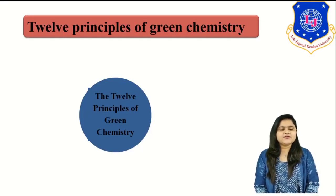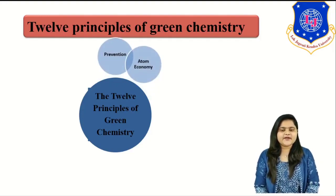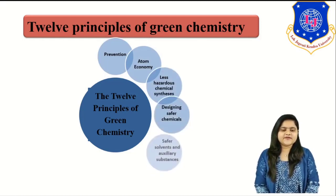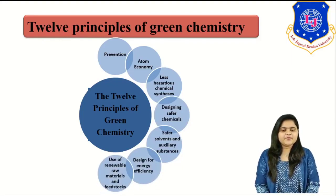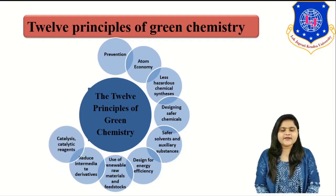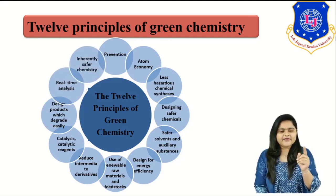In today's lecture, we will cover the 12 principles of Green Chemistry. The 12 principles are: one, prevention; two, atom economy; three, less hazardous chemical synthesis; four, designing safer chemicals; five, safer solvents and auxiliary substances; six, designed for energy efficiency; seven, use of renewable raw materials and feedstocks; eight, reduced intermediate derivatives; nine, catalytic reagents; ten, designed products which degrade easily; eleven, real-time analysis; and twelve, inherently safer chemistry.